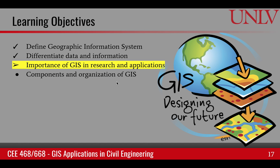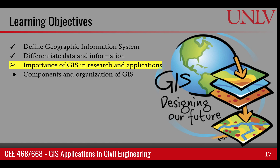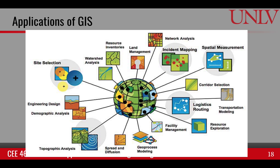The next learning objective is the importance of GIS in research and applications. GIS has found itself in many applications in real life. These include very small scale applications on urban scale and even parcel scale to global scale, where we are interested in spatial questions about the whole world. This graphic shows various examples of these applications and I will talk about a couple of them.